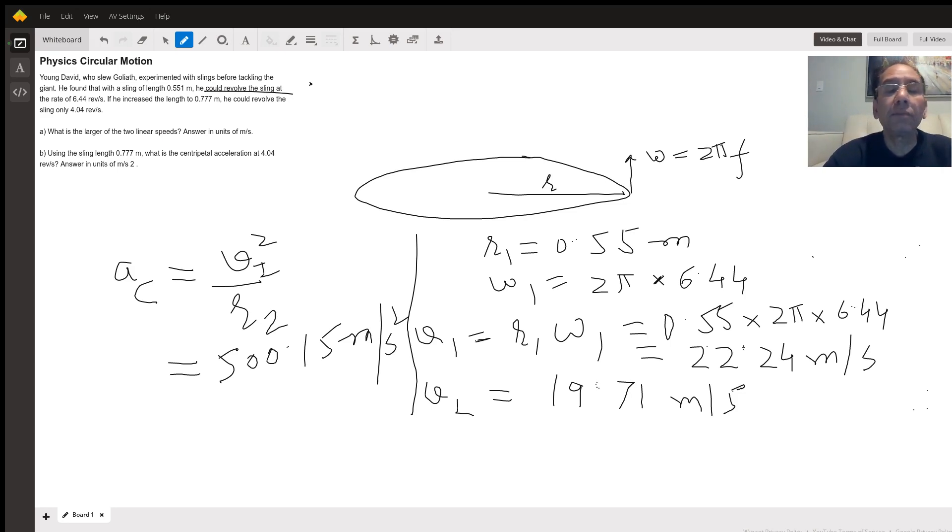We calculate the centripetal acceleration. Centripetal acceleration is velocity squared divided by the radius. In this case, for the second case with the given velocity, it works out to be 500.15 meters per second squared.